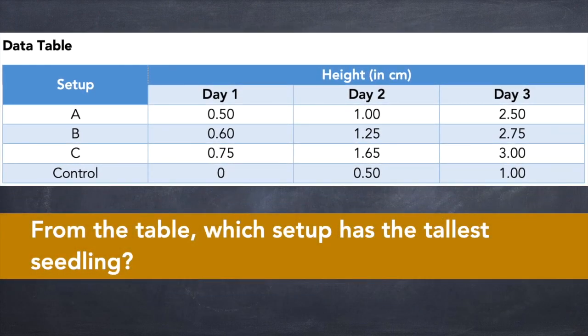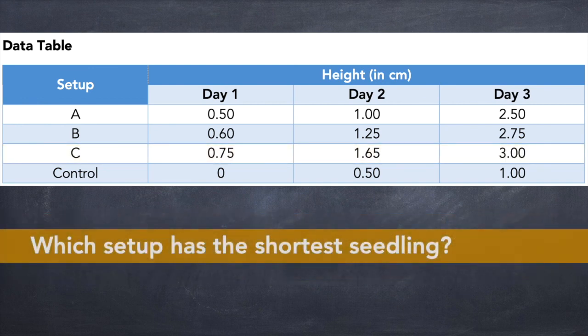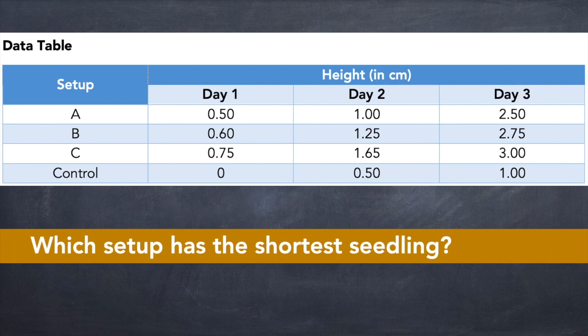From the table which set up has the tallest seedling? Of course it is set up C which has recorded height of only one centimeter in height. What about the set up that has the shortest seedling? Of course it is the control which has the recorded height of only one centimeter.